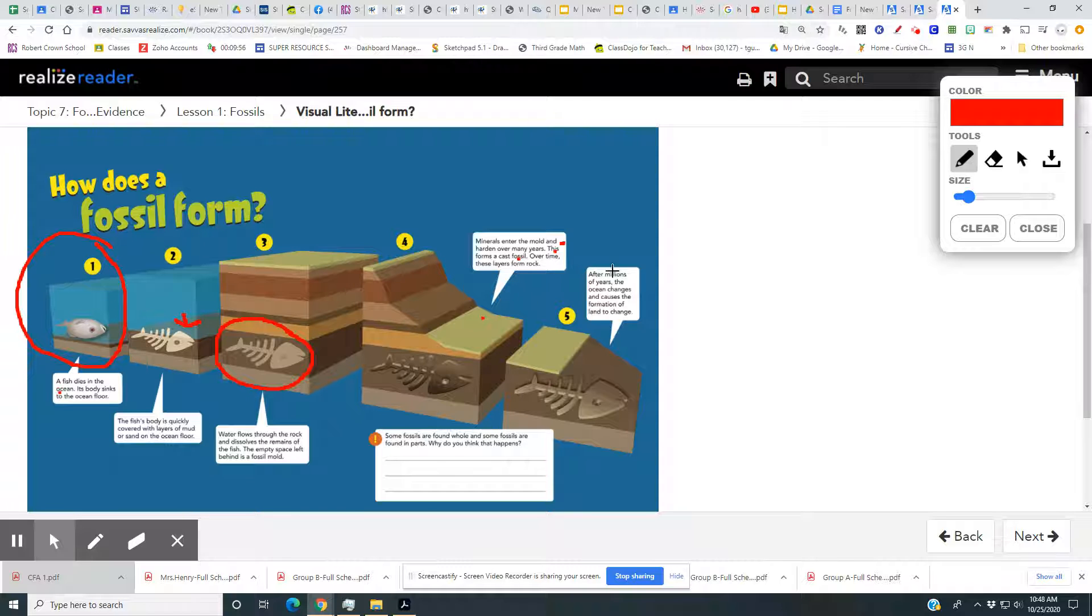After millions of years, the ocean changes and causes the formation of the land to change. Some fossils are found whole and some fossils are found in parts. Why do you think that happens? Go ahead and write what you think, your prediction, and you might change it after you watch the next video.